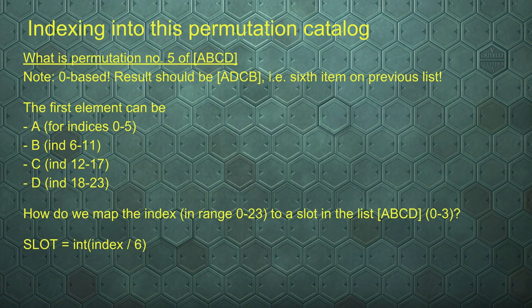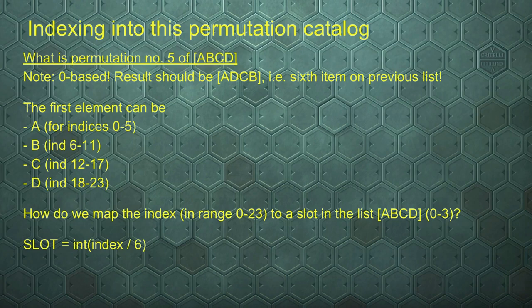Let's extend our example. We already have the list A, B, C, D. Now let's take a look at what would be permutation number 5 of A, B, C, D — note that this index is also 0-based. So if we scroll back to the permutation catalog of A, B, C, D, we would find that the sixth item on that list is A, D, C, B. That's the one we want when we say index number 5. Index number 0 would reference A, B, C, D itself.